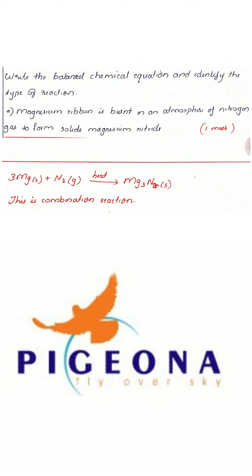The product is magnesium nitride, Mg₃N₂. Note the difference: nitrite is N³⁻ and nitrate is NO₃⁻, but here the product is magnesium nitride. Using valency, magnesium is Mg²⁺ (valency 2) and nitrogen has valency 3 (N³⁻). Cross-multiplying gives us Mg₃N₂, which is a solid.